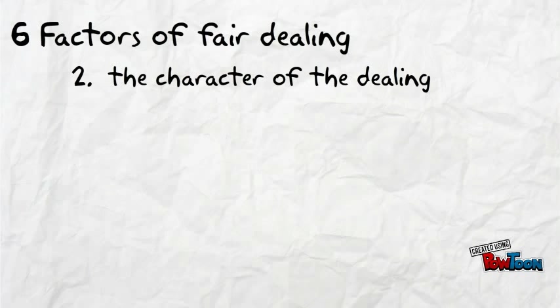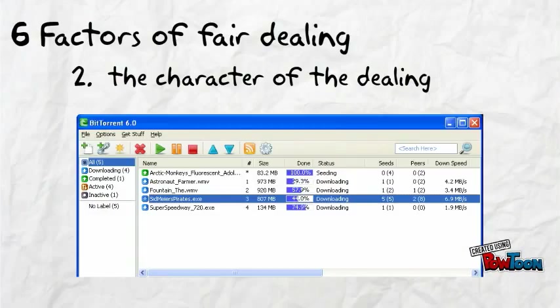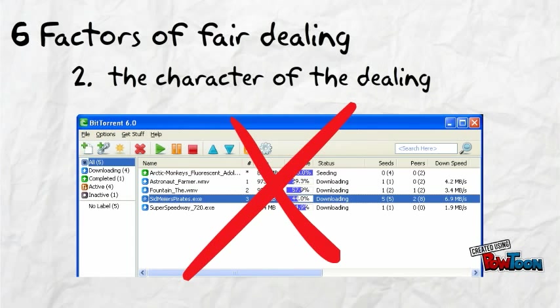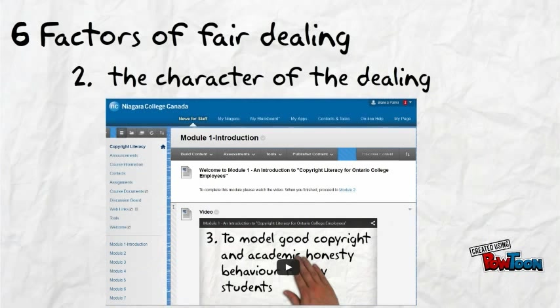Number two: the character of the dealing. How many copies of this work are you making? For instance, are you making multiple copies of the work available on a public site for others to copy? That would be considered unfair. Or are you putting it on a password-protected site like Blackboard? That would be considered fair.